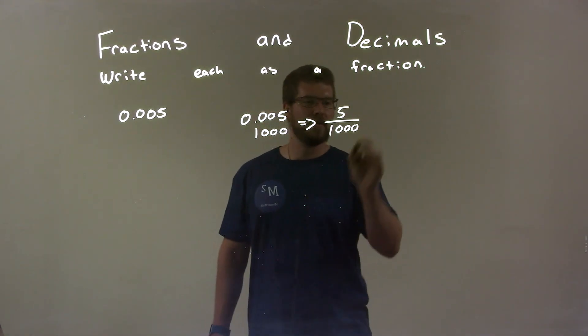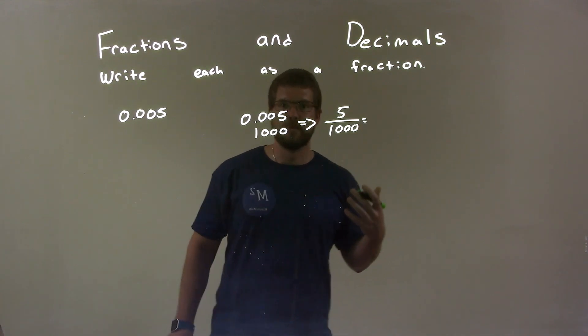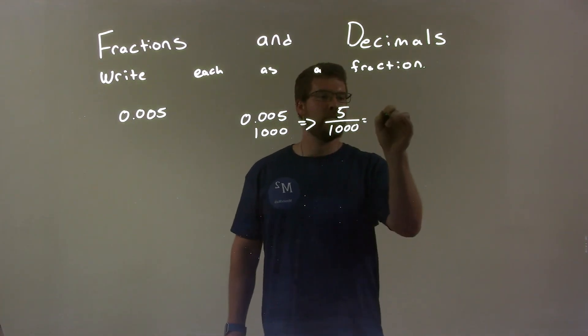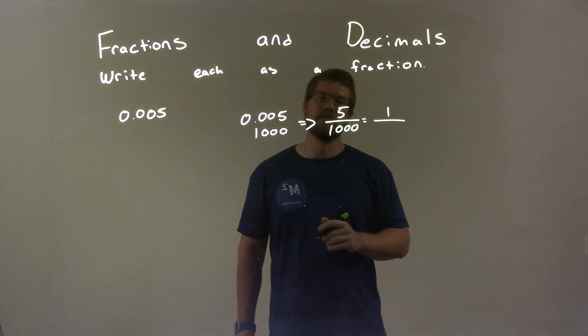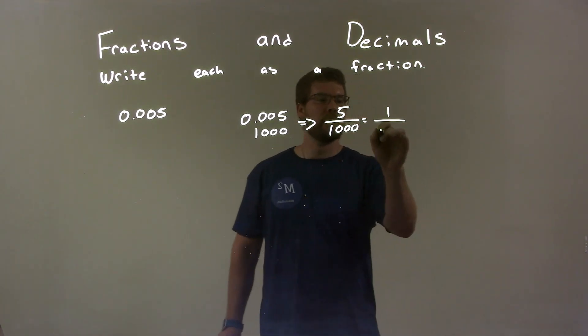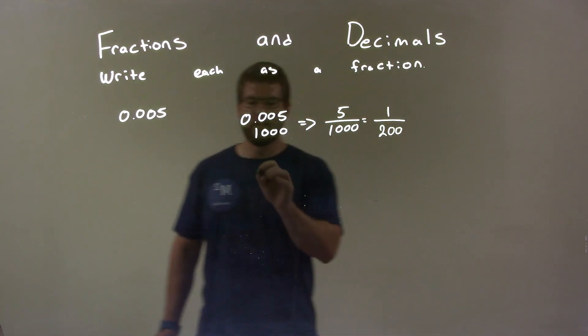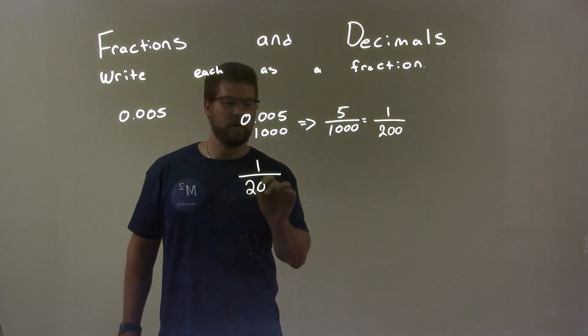I have 5 over 1,000, I can simplify that. Both are divisible by 5. 5 divided by 5 is 1, and 1,000 divided by 5 is 200. And so, my final answer is just 1 over 200.